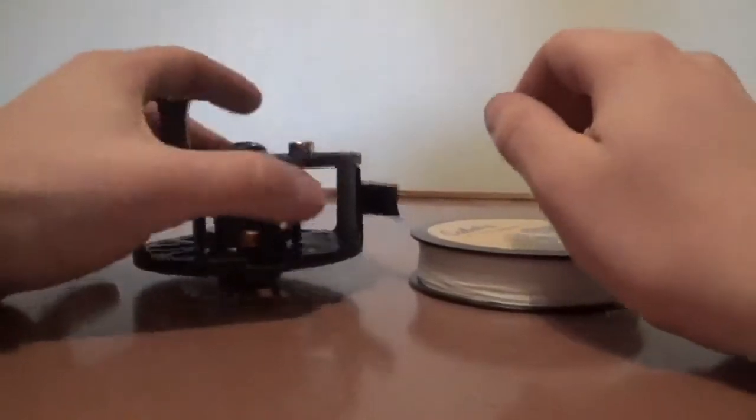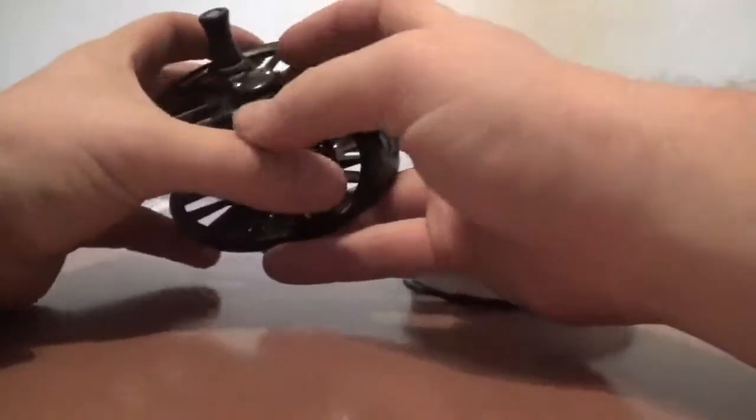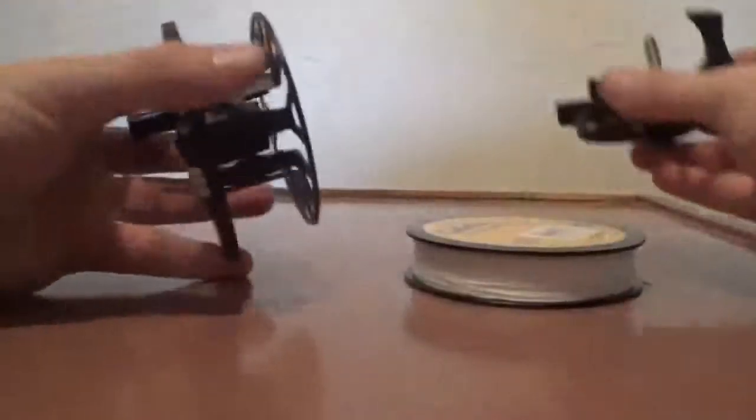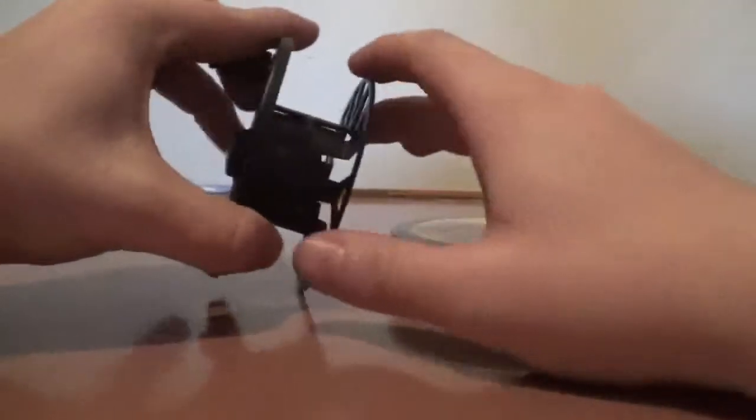The way I usually tie this, the easiest way to do it, is I always pull the spool out from the frame of the reel and lay it face down.